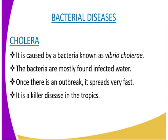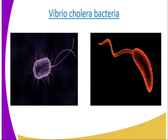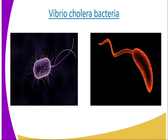The first bacterial disease we are going to look at is cholera, caused by a bacterium known as Vibrio cholerae. The diagram on our screen shows the shape of this bacteria. It is a killer disease in the tropics. The bacteria are normally found in infected water and are passed on by flies to food, thereby contaminating it. People living in unhealthy conditions where sanitation is poor and the domestic water supply is contaminated can easily contract the disease. Once there is an outbreak, it spreads rapidly and can cause an epidemic.